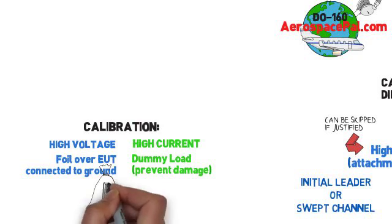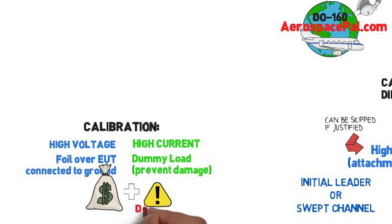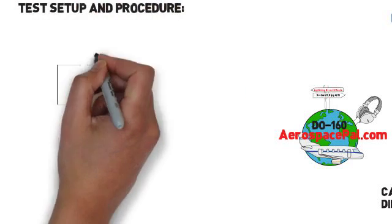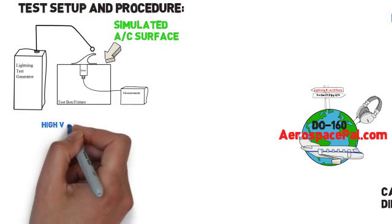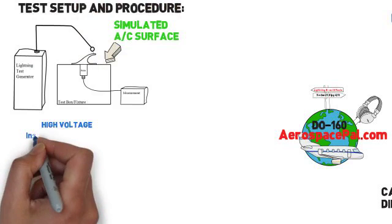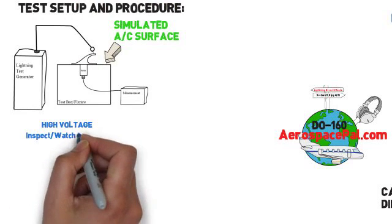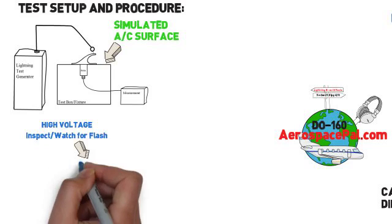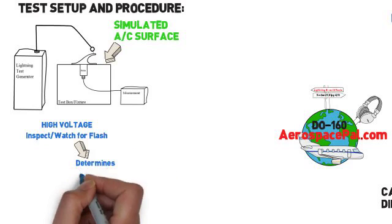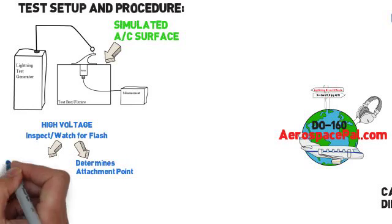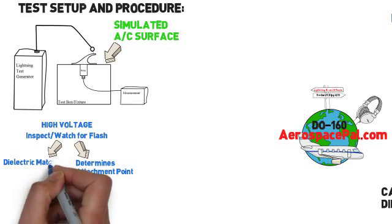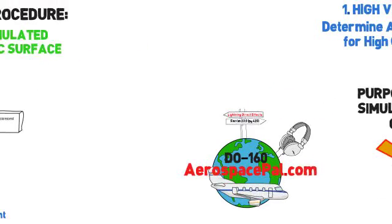These tests should be run by trained professionals as they require both expensive equipment and dangerous voltages and currents. Once calibration is achieved, the EUT will be placed in a simulated aircraft surface. The lightning strike will be injected on an unpowered EUT. For the high voltage test, inspect the EUT for a flash during the test and dielectric breakdown after. The arcing evidence determines the attachment point for the high current test.